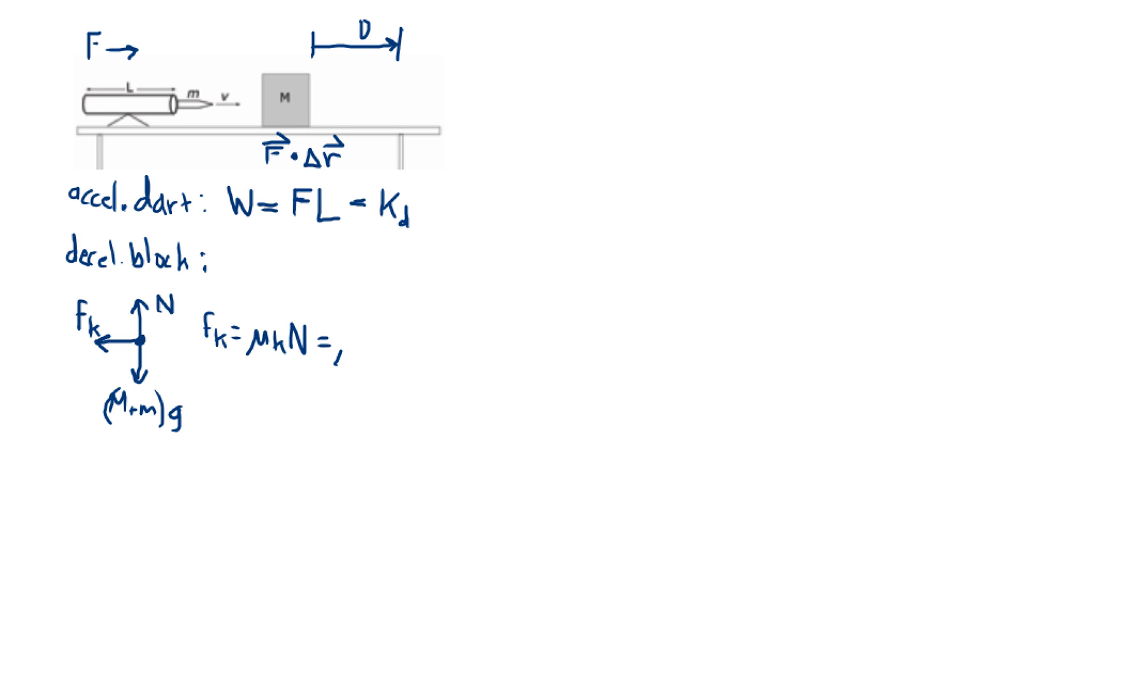FK, which is going to be equal to mu K times the total mass of the block and the dart times G, which is constant. So, since FK is constant, the work done by friction is going to be, well, the only difference between this and dart being accelerated is that now the force is in the opposite direction of the motion.